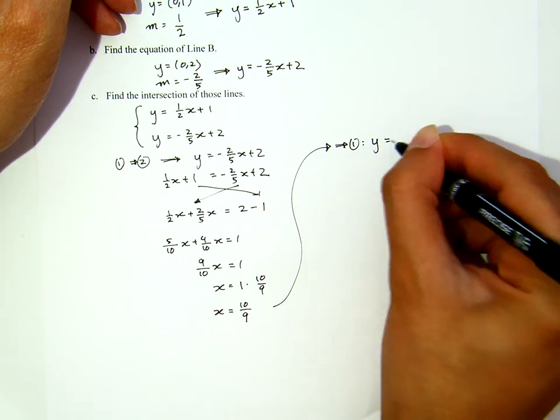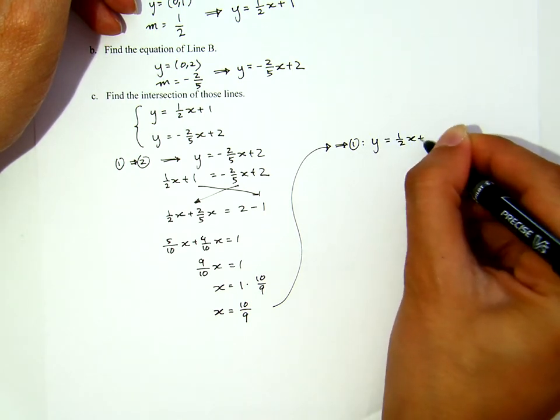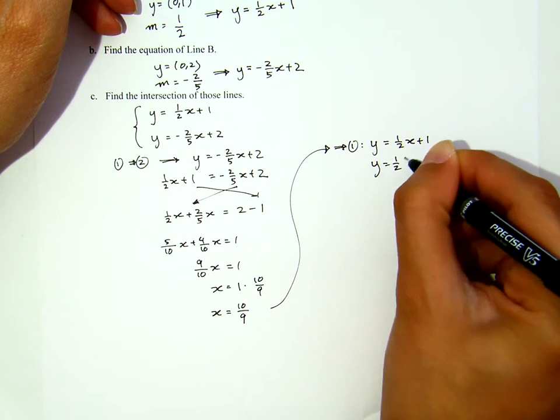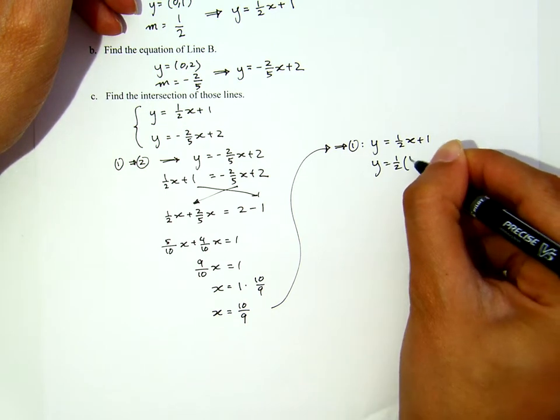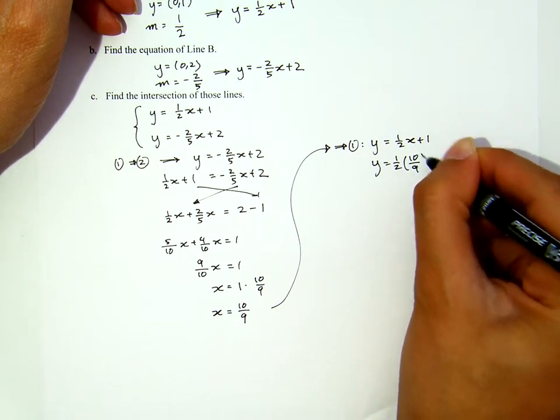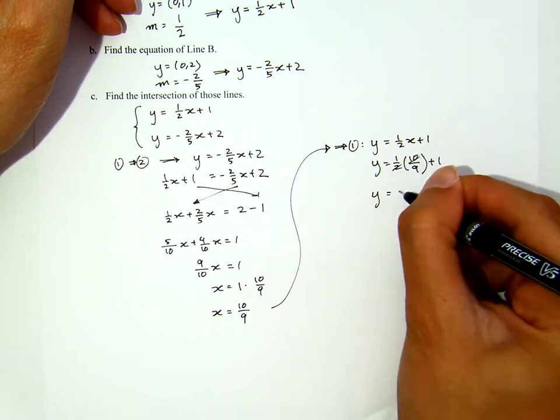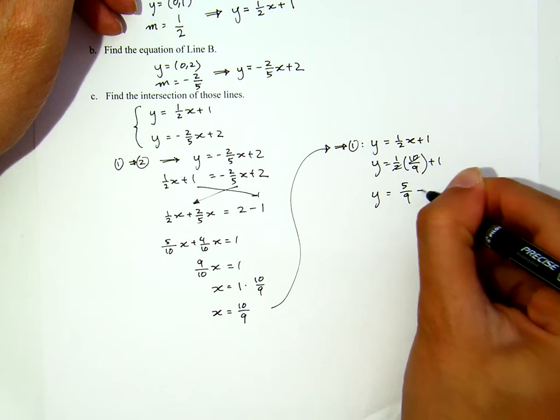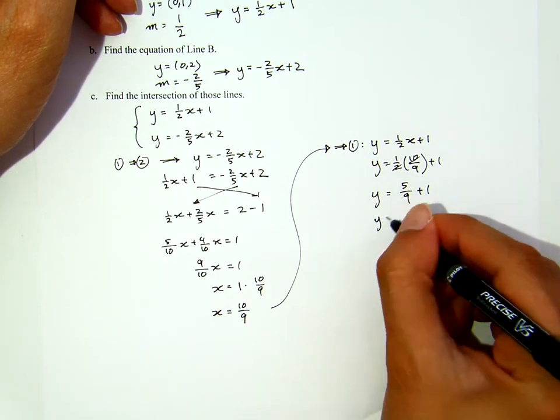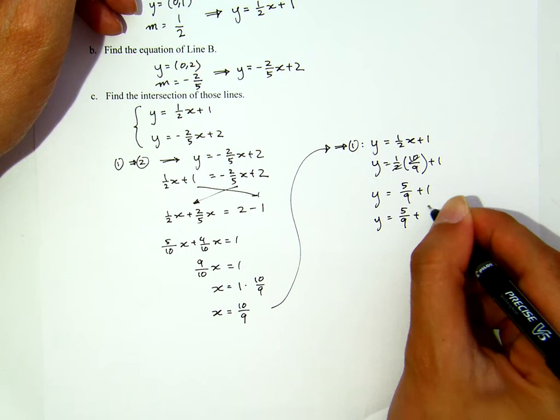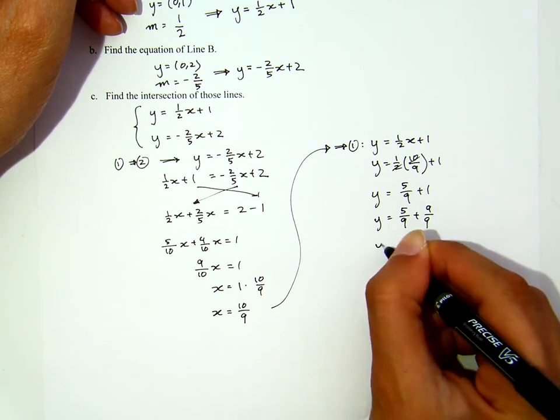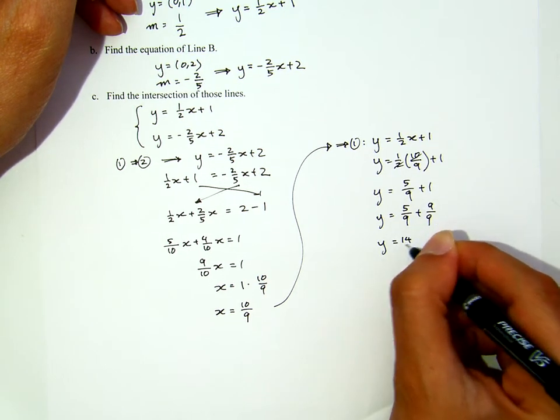Y equals one-half x plus 1. That's equation one. And I will plug in. We substitute the x by ten over nine. That will give me cross cancel here, right? We have five over nine plus one. Y equals five over nine plus nine over nine. Y equals fourteen over nine.